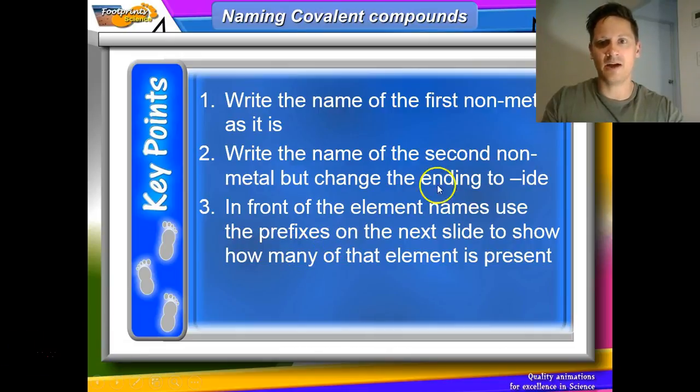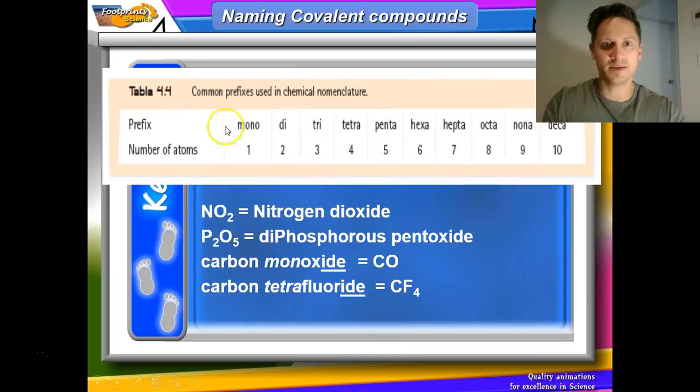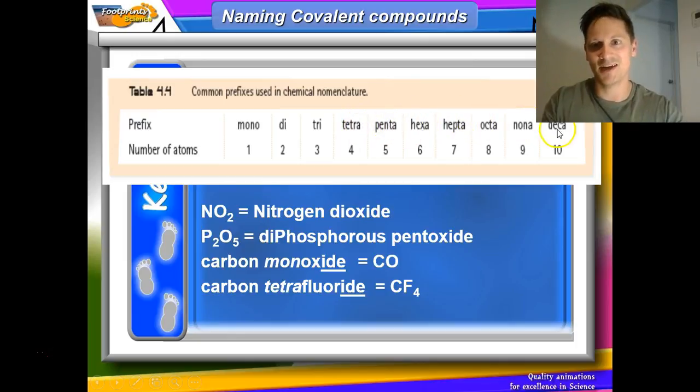When you're naming covalent compounds, you write the name of the first non-metal as is. The second non-metal, the ending changes to -ide, just like in ionic bonding. But we have to use prefixes in order to determine how many of those elements are present. And the prefixes are listed here. 1 to 10, so mono, di, tri, tetra, penta, hexa, hepta, octa, nona, deca. The last two you don't use all that often.